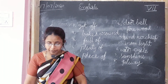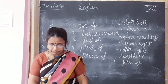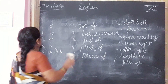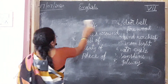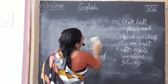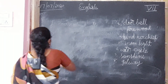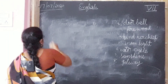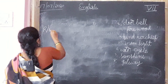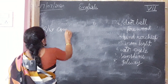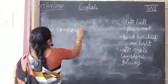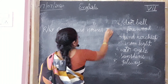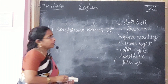Now take your diaries and note down the homework. Your homework is: compound nouns are given for you — read and write these compound nouns three times. Read and write compound nouns three times. Understand? Thank you all of you.